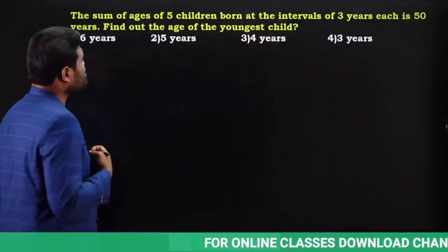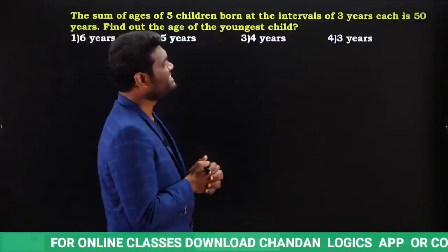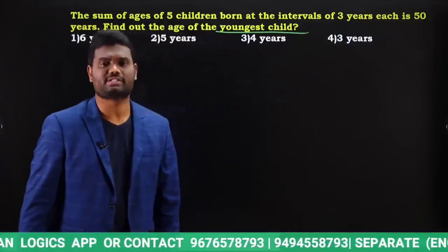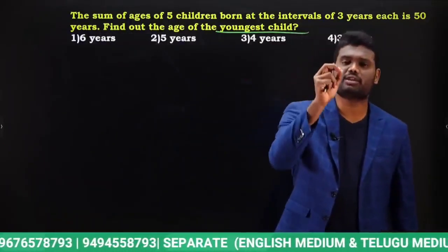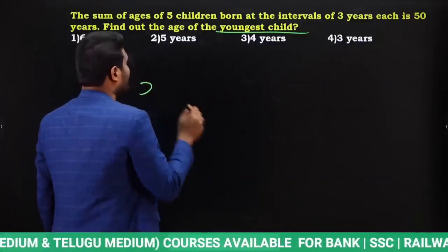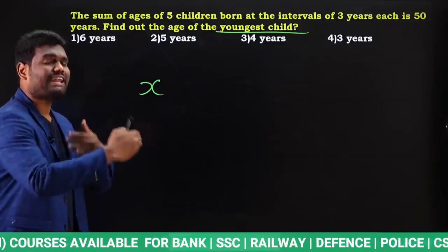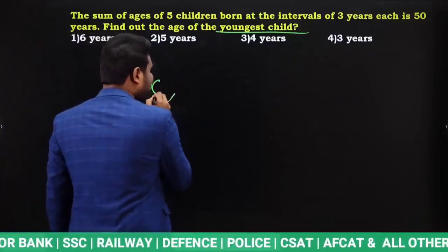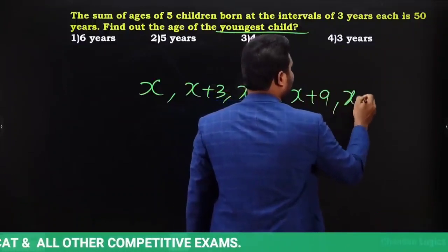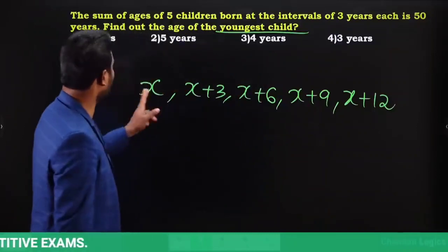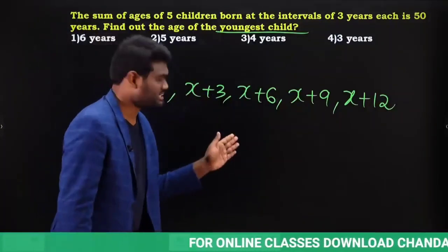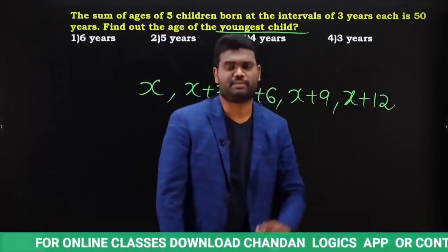Next question: the sum of ages of 5 children born at regular intervals of 3 years each is 50 years. Find the age of the youngest child. Most students take the youngest child as X, then write ages as X, X+3, X+6, X+9, X+12, sum them, set equal to 50, and solve for X. But this approach wastes a lot of time in examination.